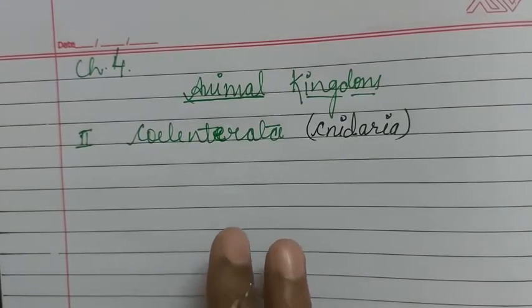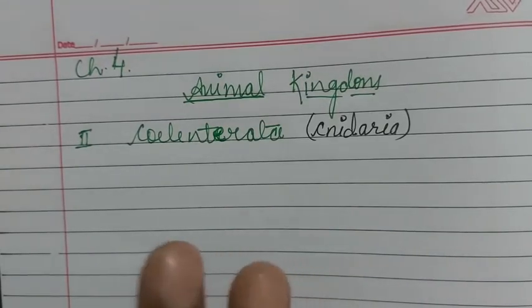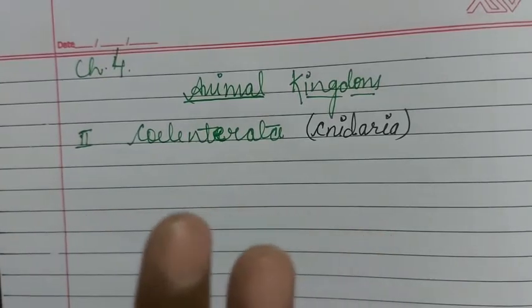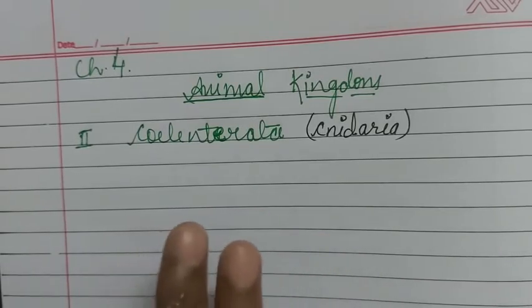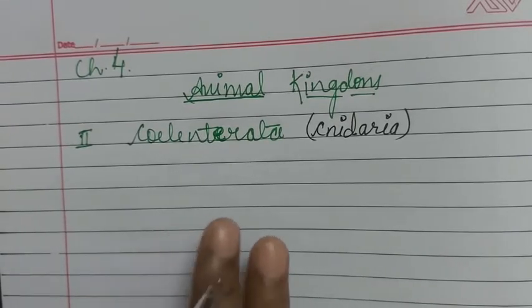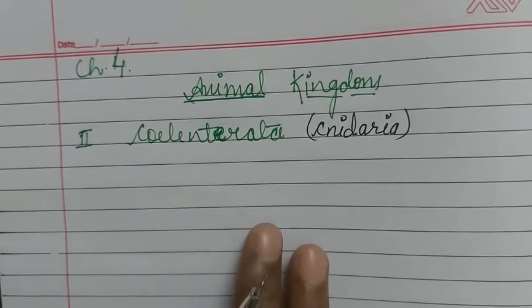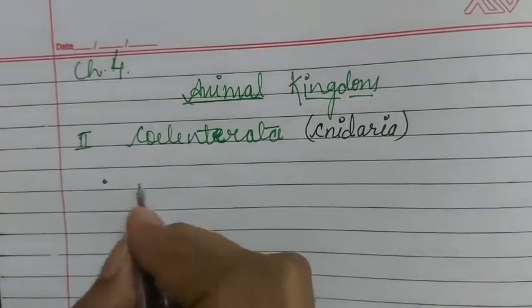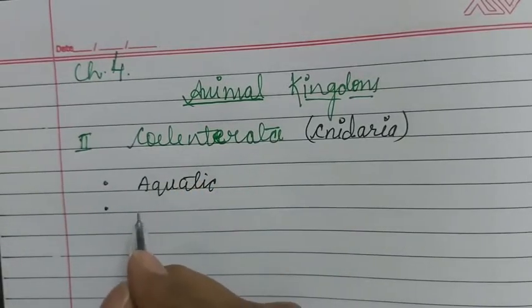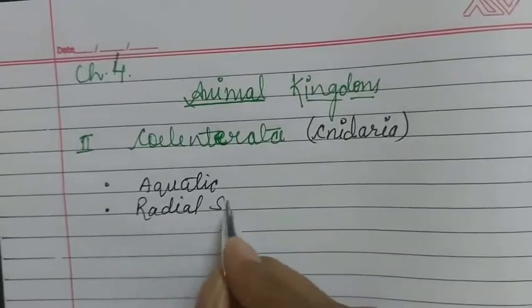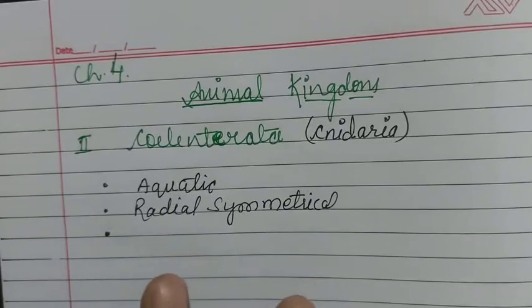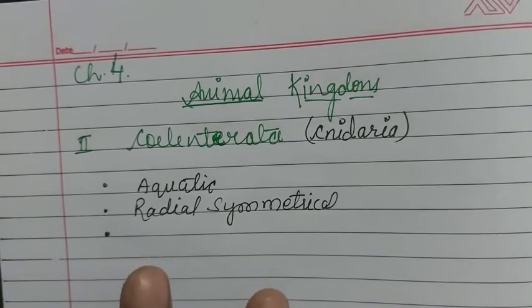On the basis of body organization, Cnidaria are at tissue level of organization. On the basis of embryonic layers, they are diploblastic — the embryo contains two layers: ectoderm and endoderm. On the basis of symmetry, they show radial symmetry.